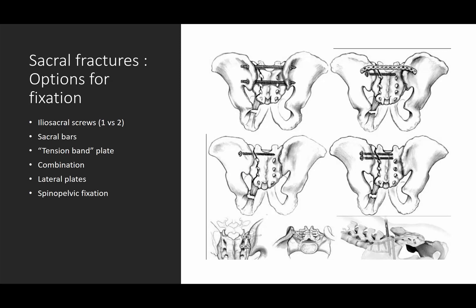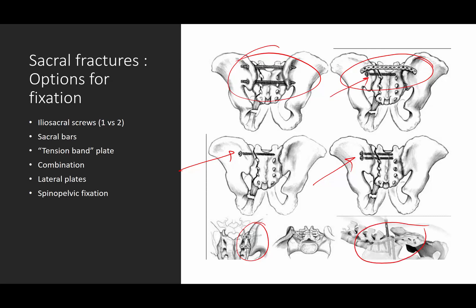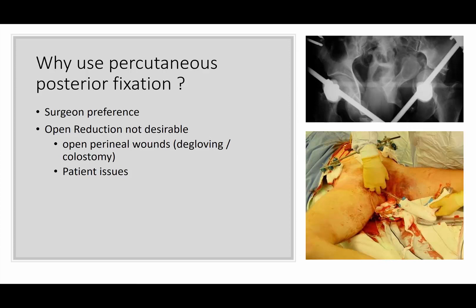There are numerous options for fixation. Iliosacral screws, one or two, are shown here. Sacral bars — an older technique — are another option. A related approach is the tension band plate, or posterior transiliac plate, which can be combined with an iliosacral screw. You can also do lateral plates applied horizontally or vertically. And spinopelvic fixation, shown here, will be discussed further in the next lecture.